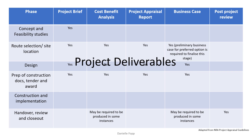As we can see on screen, we have some key phases from an example client. This has been adapted from the NRA project appraisal guidelines, and this specific client requires a project brief, cost analysis, project appraisal report, business case, and post-project review — required at different stages throughout the project timeline. This table may look different depending on your client and their needs, but it's really important in that first kick-off meeting or when signing the contract that you are very clear on what deliverables the client foresees as being required.